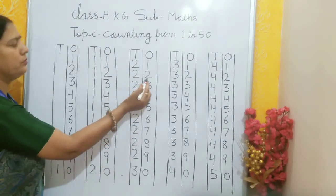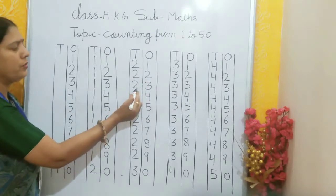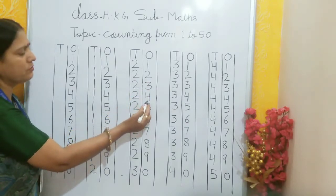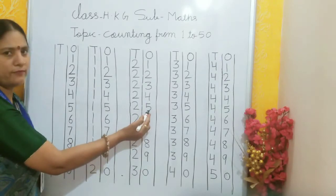2, 1, 21. 2, 2, 22. 2, 3, 23. 2, 4, 24. 2, 5, 25.